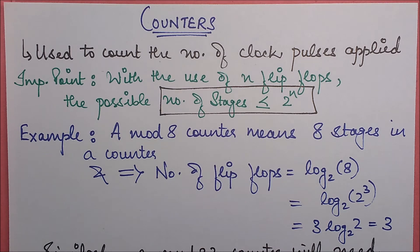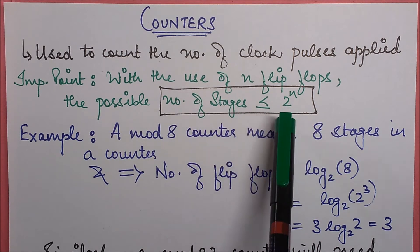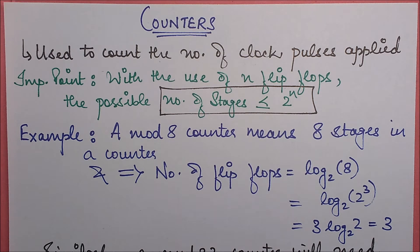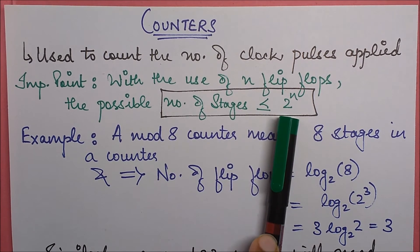Now, if I have n flip-flops, the possible number of stages of a counter will always be less than or equal to 2 to the power n. Why not exactly equal? Because the maximum number of stages is 2^n, but every counter may not use all the stages. So we write that the number of stages is less than or equal to 2^n.